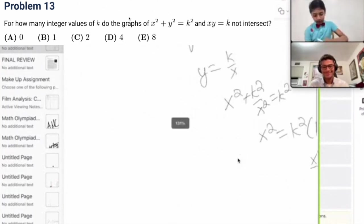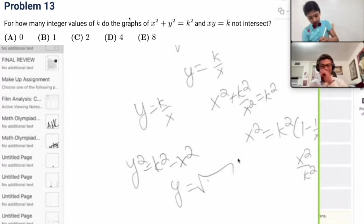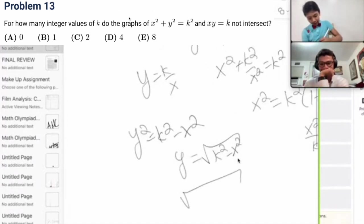Okay, y equals k over x, x squared plus y squared equals k. So, let's say y squared equals k squared minus x squared, then y is root k squared minus x squared. If I'm not able to solve this within five minutes, I'm not going to waste any more of your time, of course.